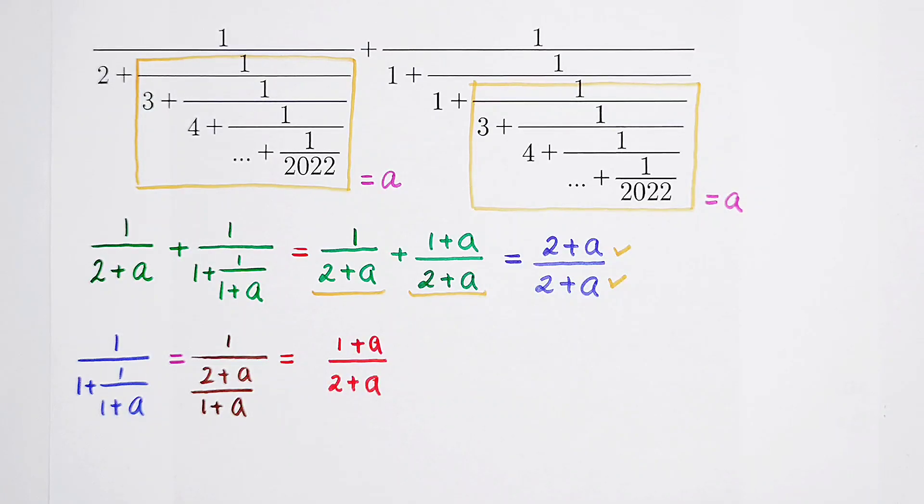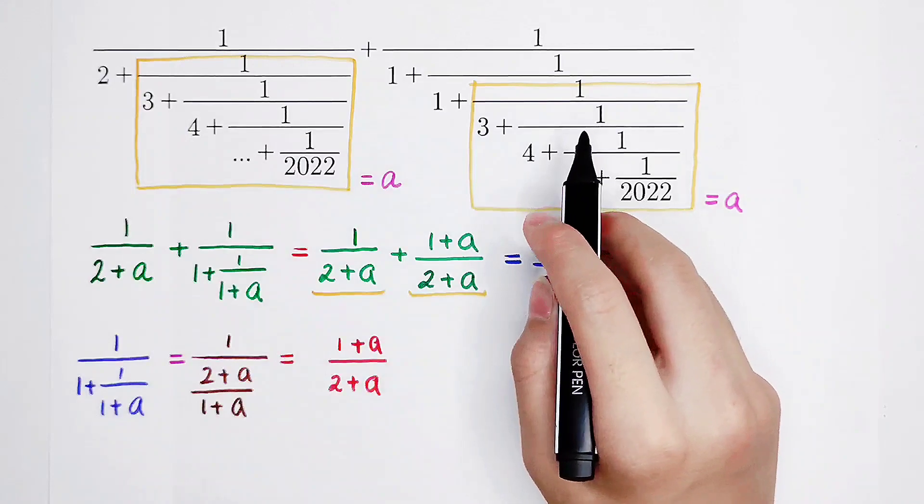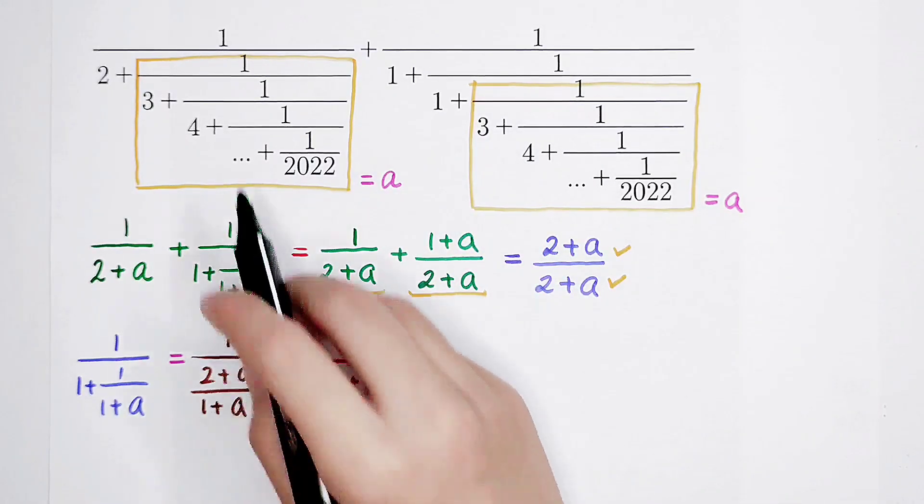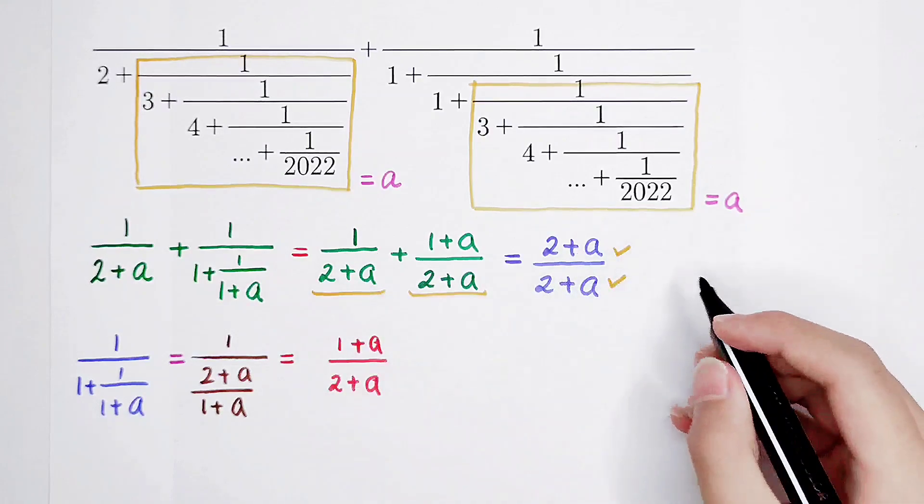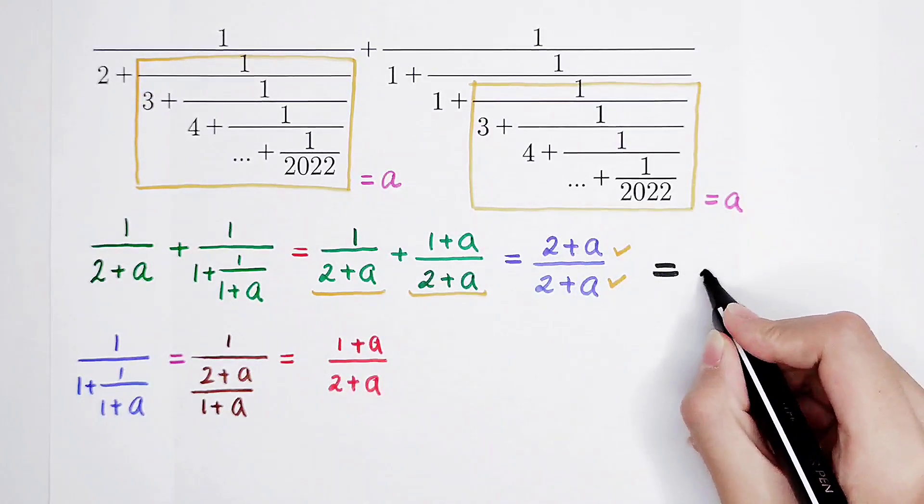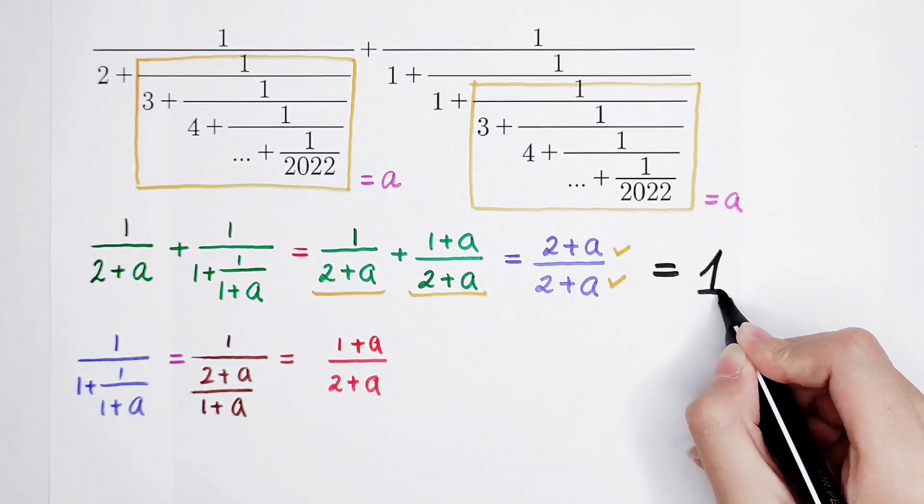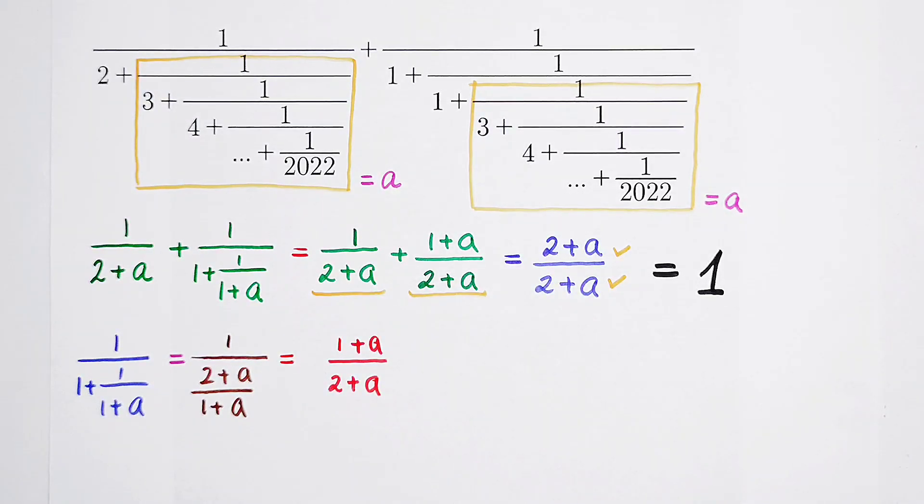Oh, I'm really happy. So now we can get the value of these two fractions. The value of the sum of these two fractions is this. It is this. And it is this. So it is 1. So the final answer is 1.